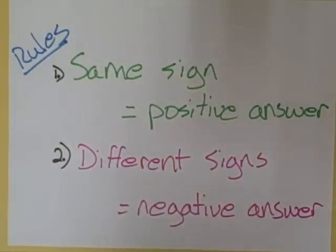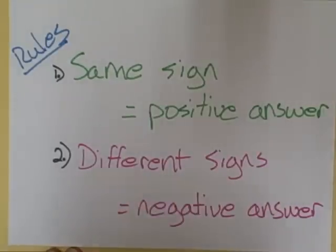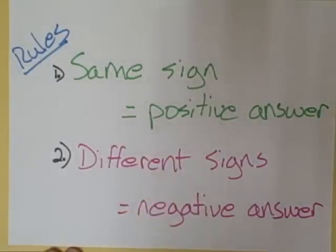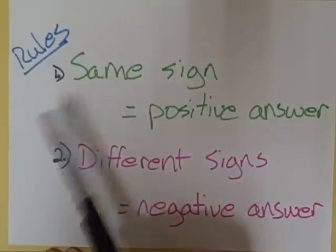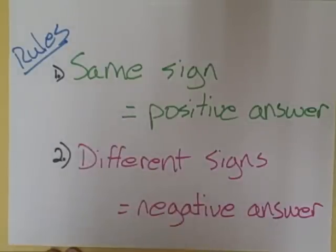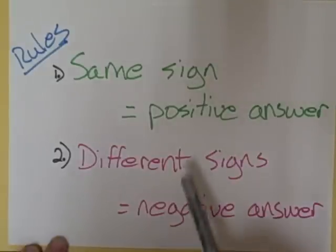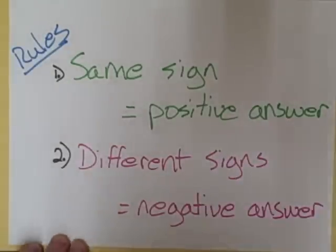The first rule is if the signs of the integers are the same, then the answer is positive. If you have a negative number divided by another negative number, your answer will actually be positive.